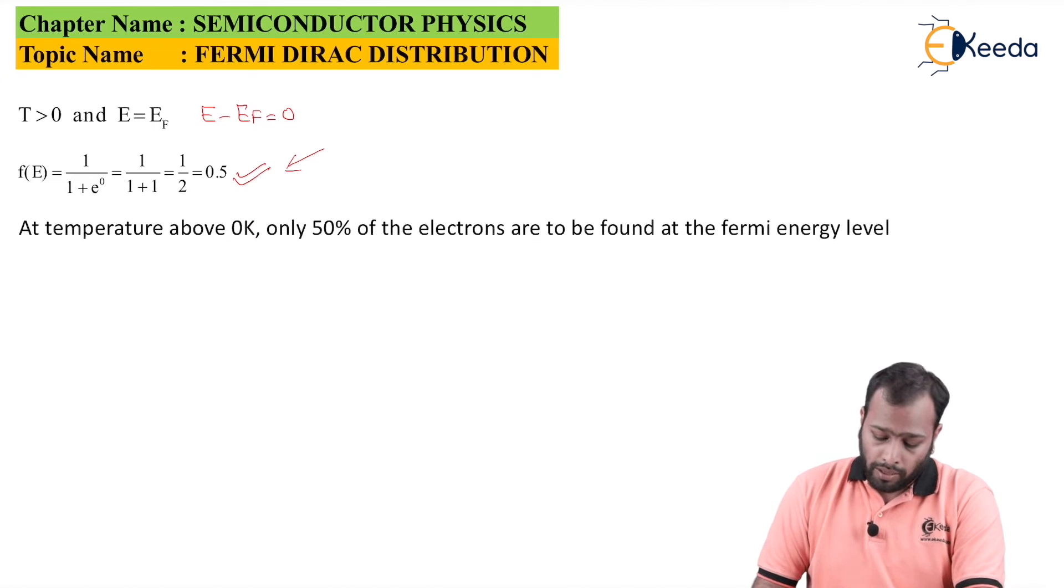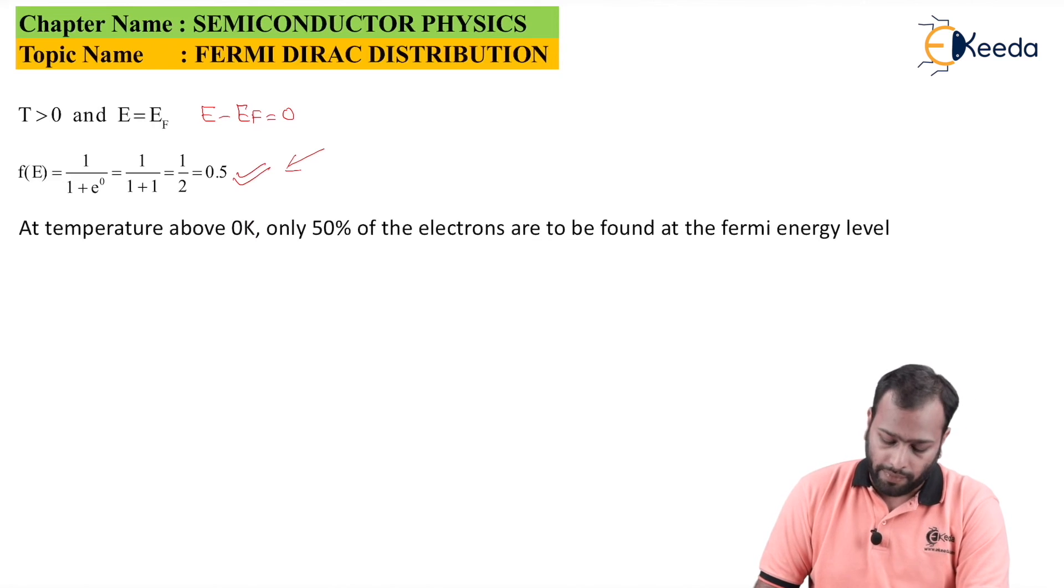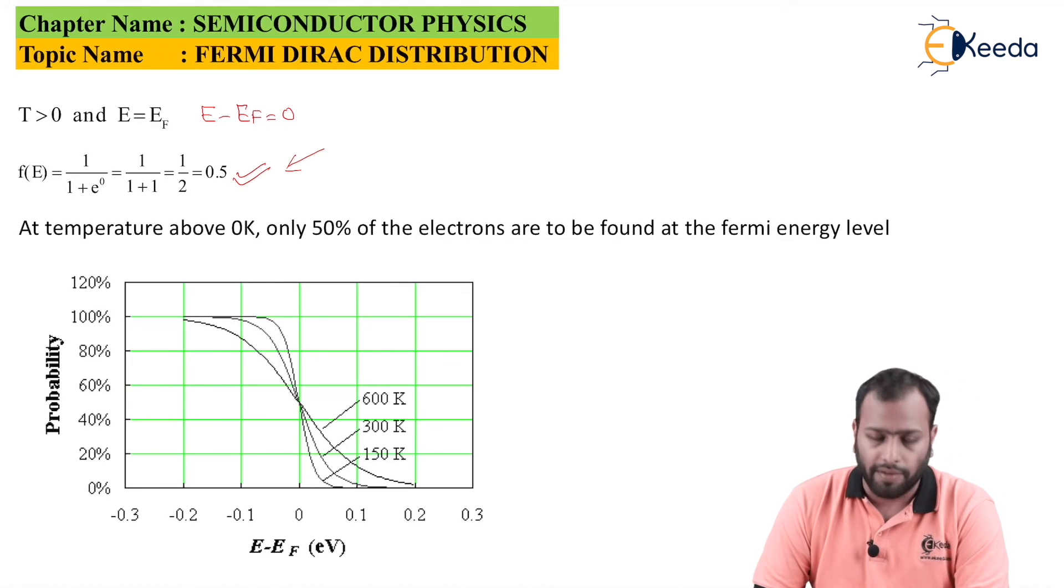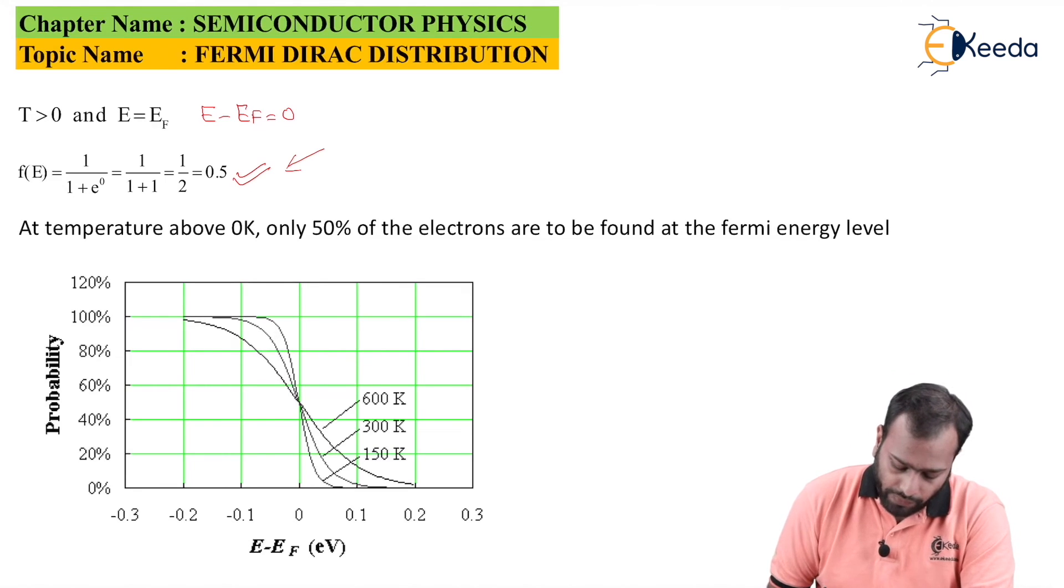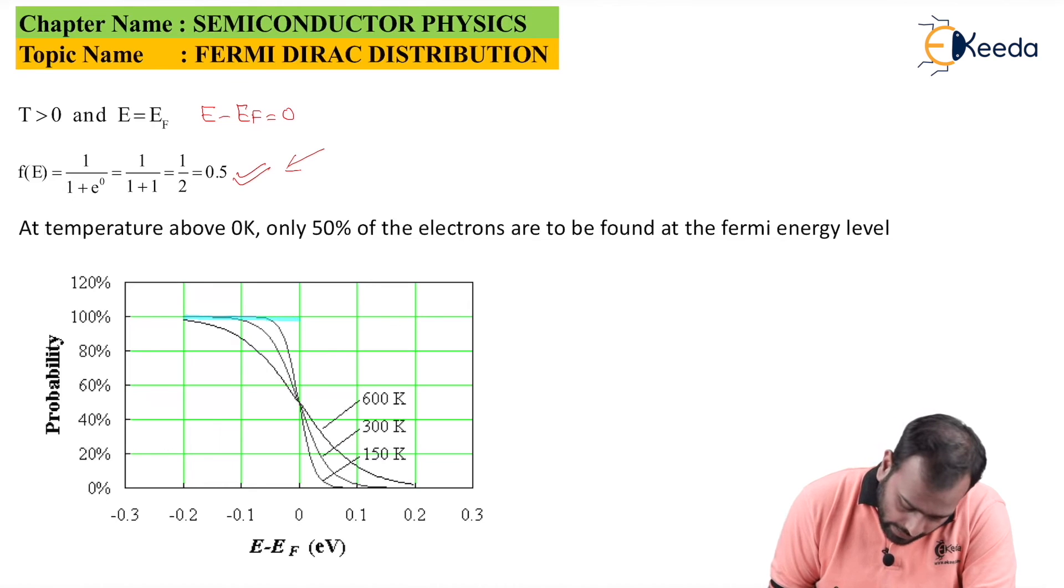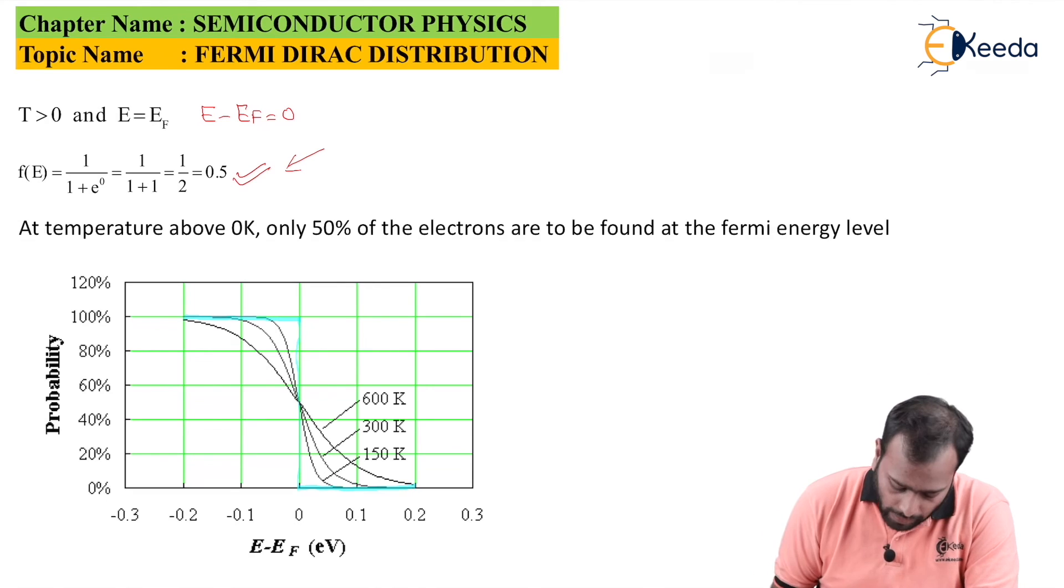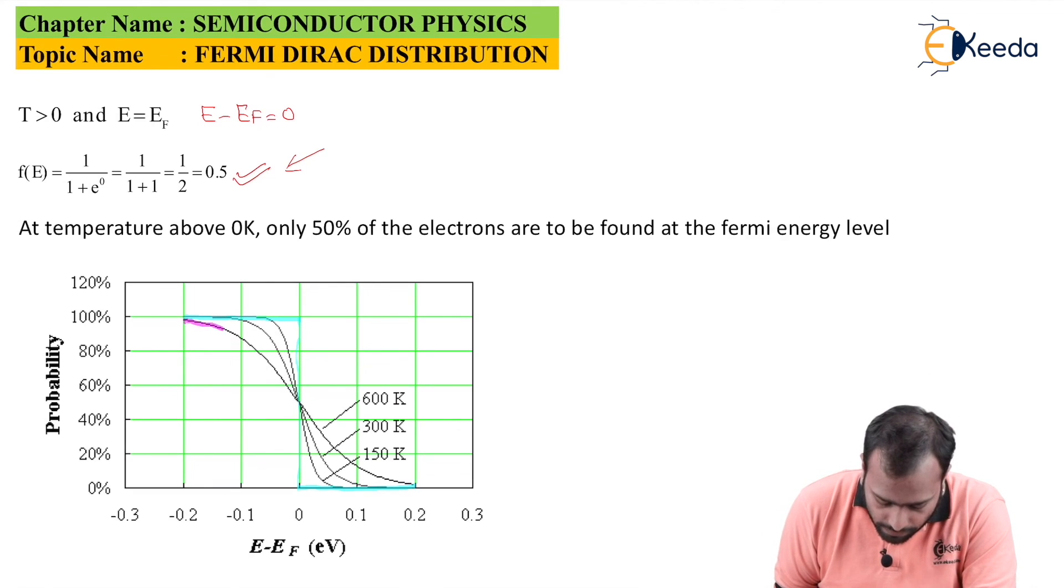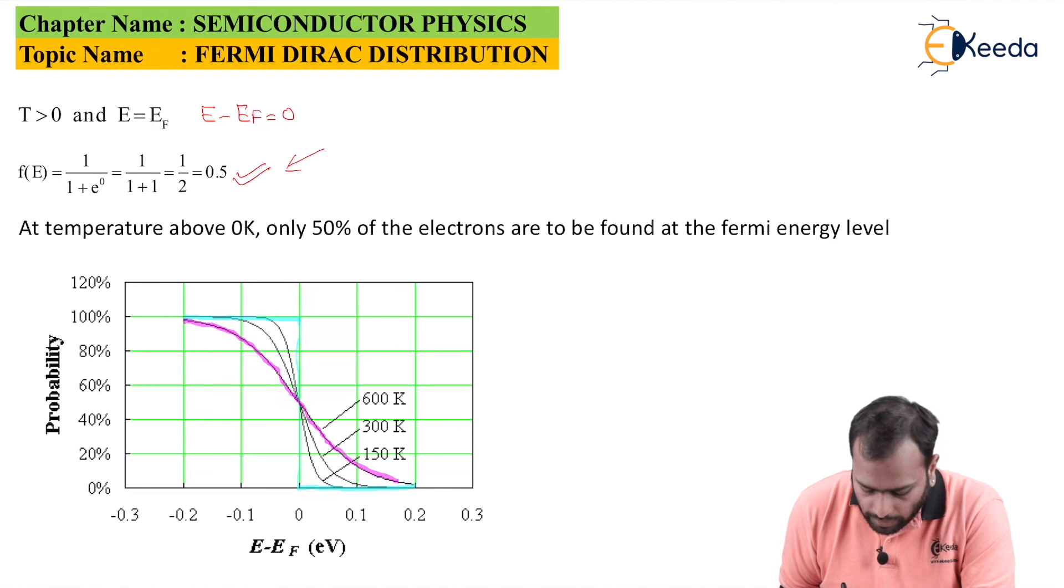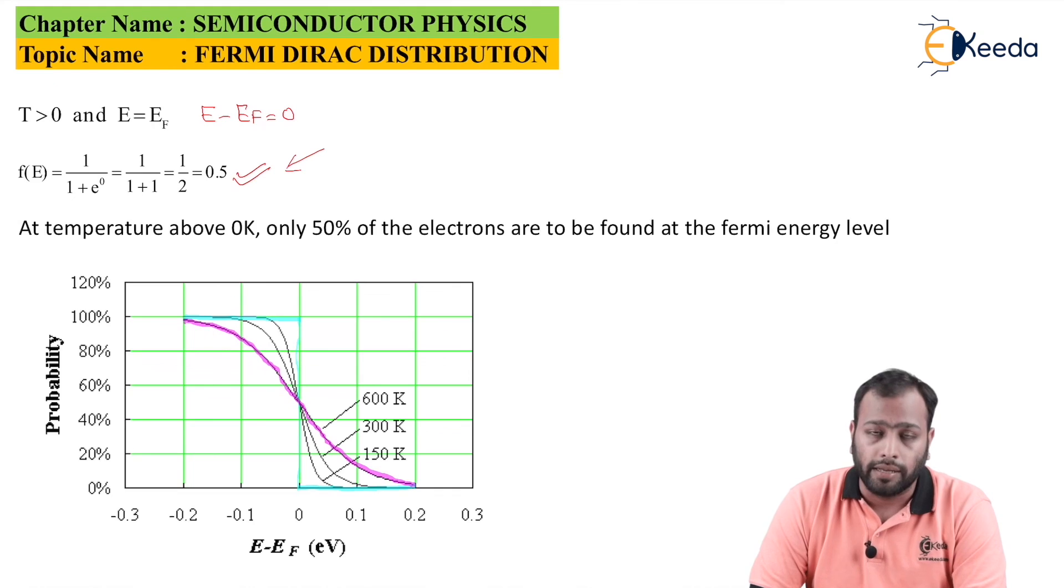Now, this can be visualized with a graph. This is the graph which I have taken, and as you can see for different temperatures there are different curves on the graph. Here you can see for 0 Kelvin this is what the graph would look like. As the temperature increases to 600 Kelvin, the structure of the graph becomes like this. As you can see, the curve nature has increased.